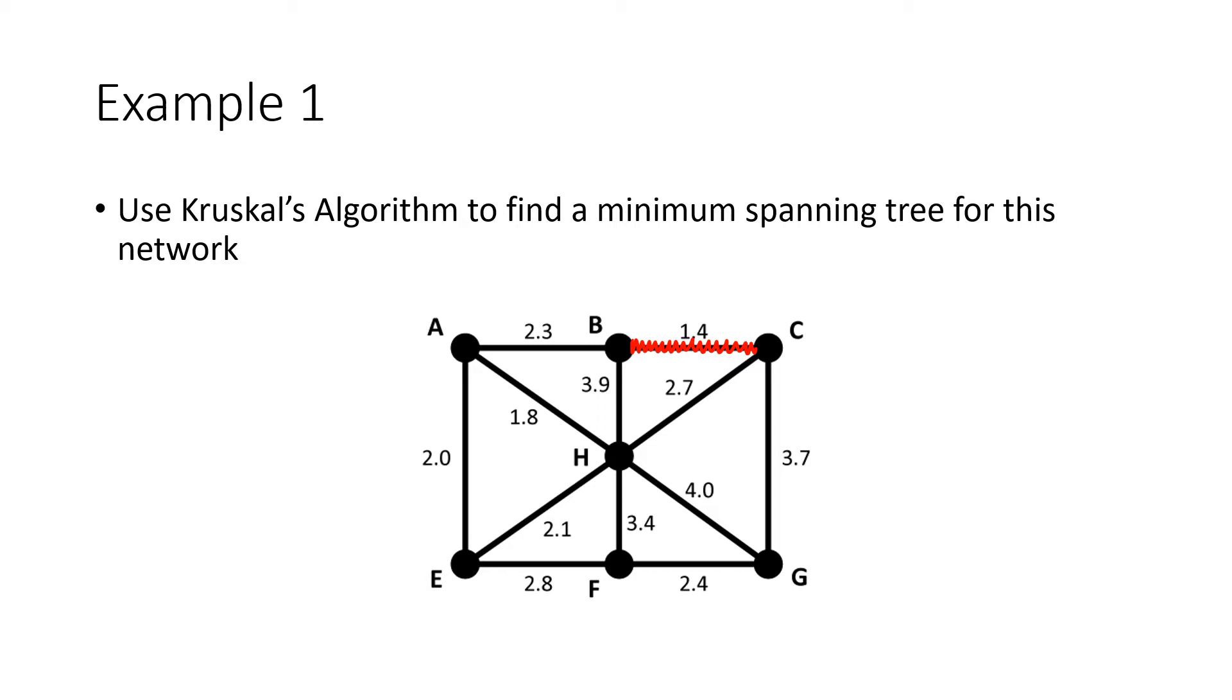Next is the edge connecting vertices A and H at 1.8, so we use that. We're still not done, so we keep going. Next up is 2.0 connecting A to E, the next lowest number on the graph. We connect those together.